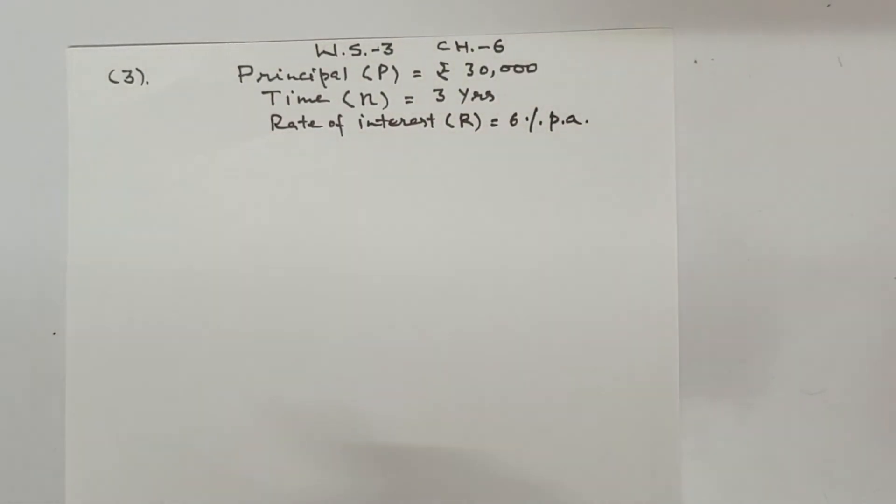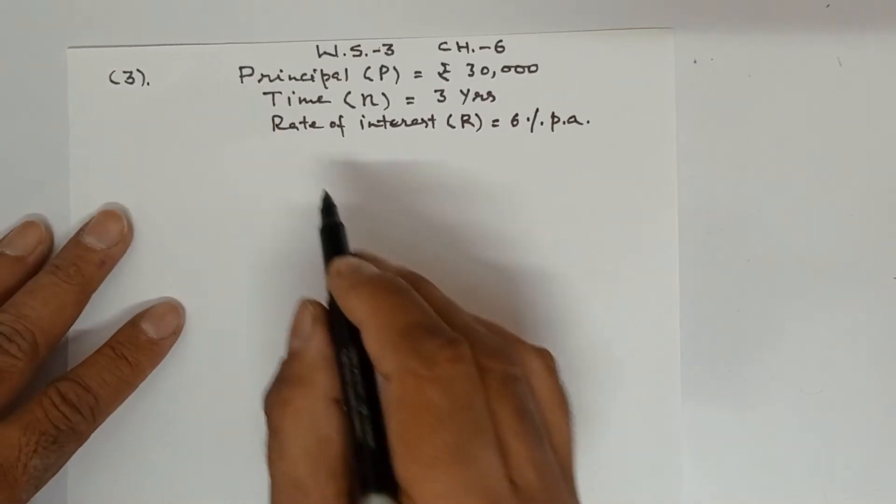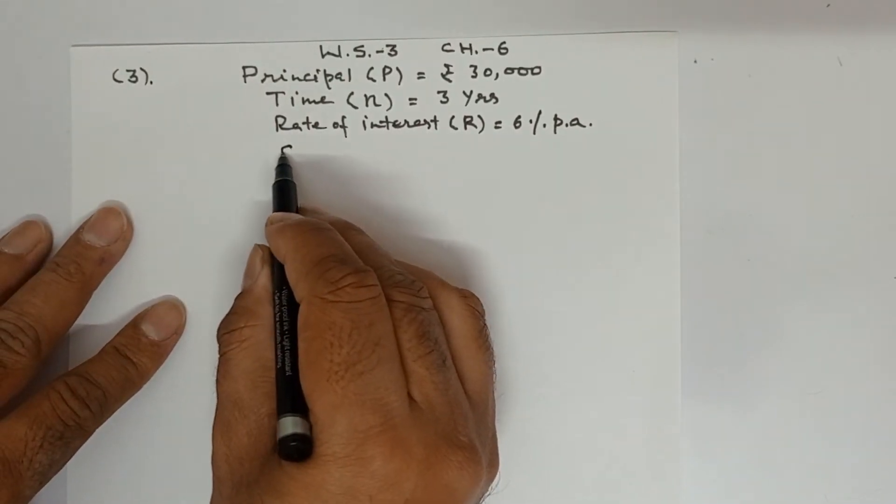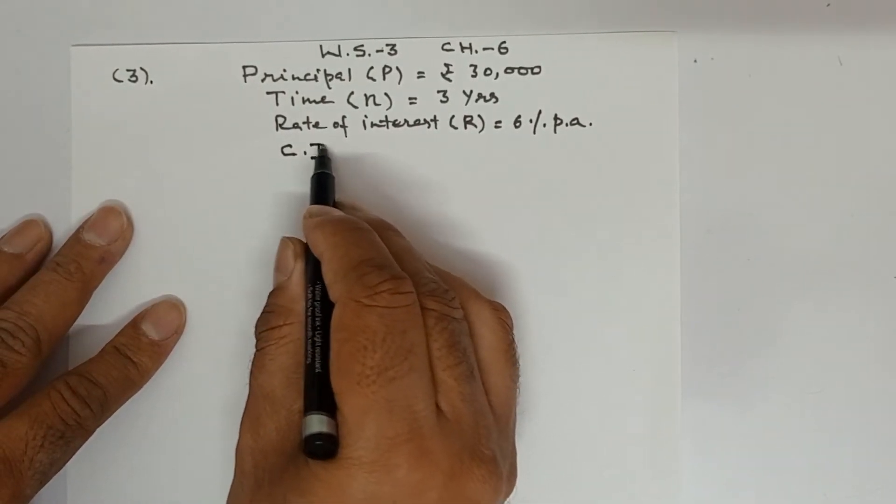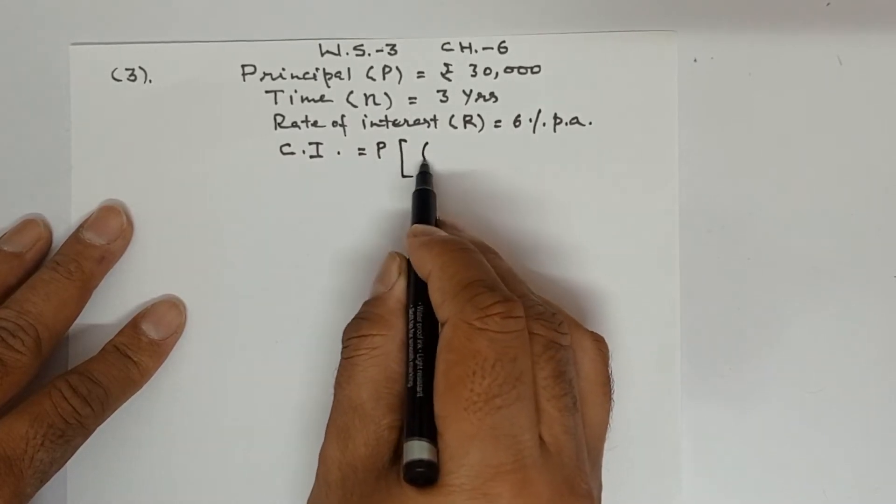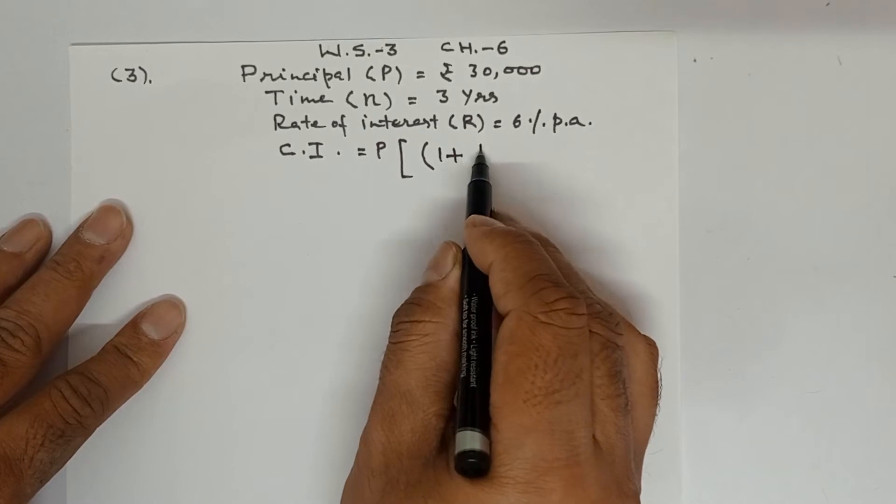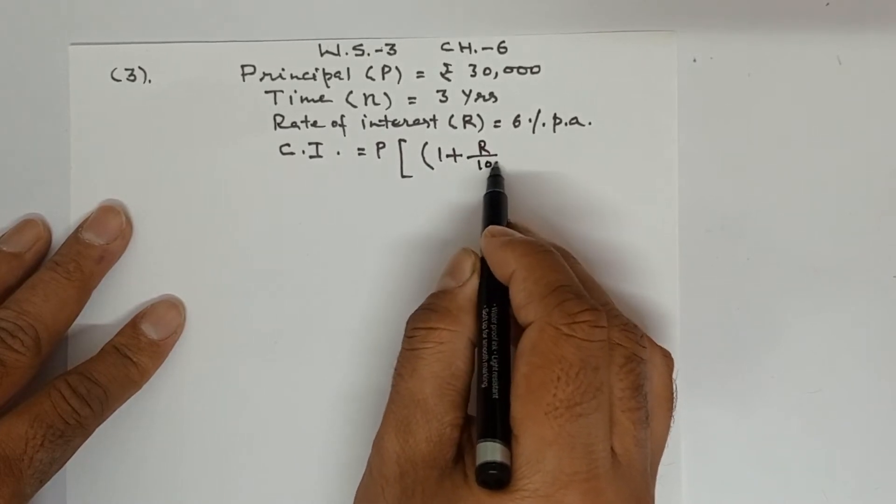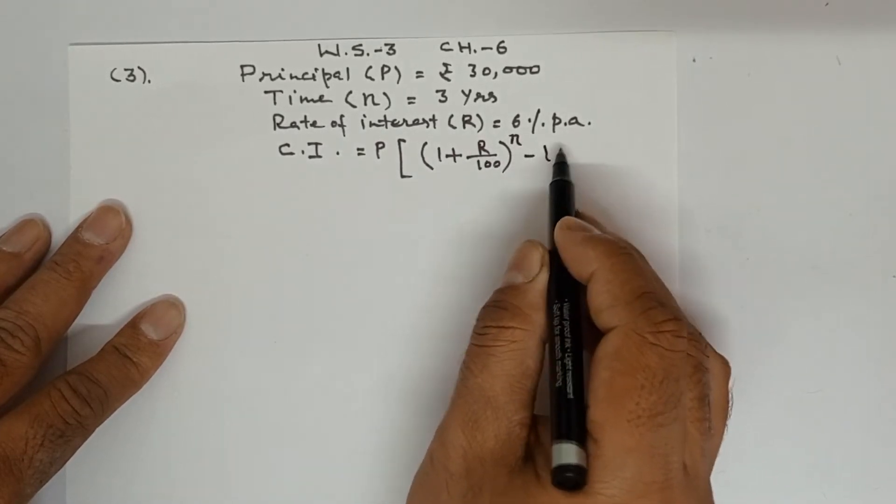Now what is asked? Find the interest paid by Ram to Shyam after 3 years. So compound interest is asked to find. So compound interest equals P times bracket 1 plus R upon 100 power N minus 1.